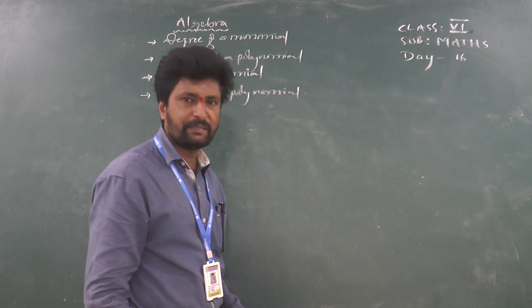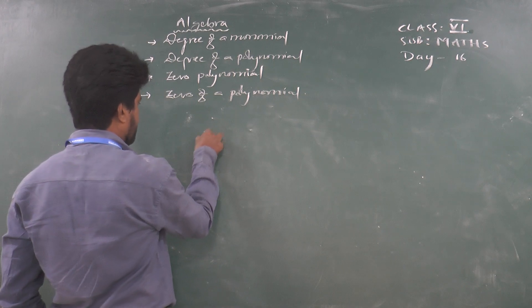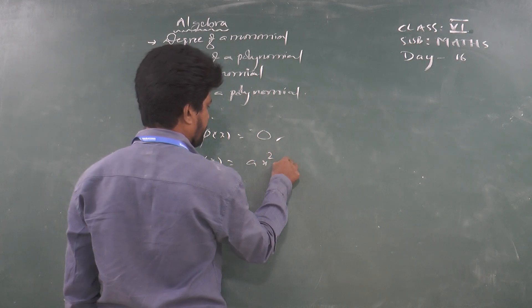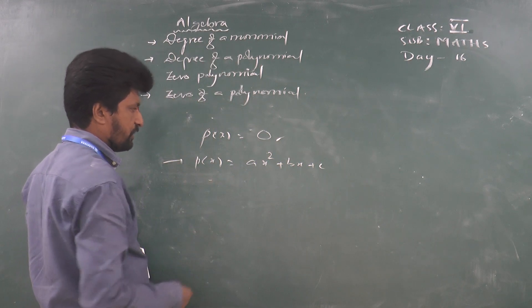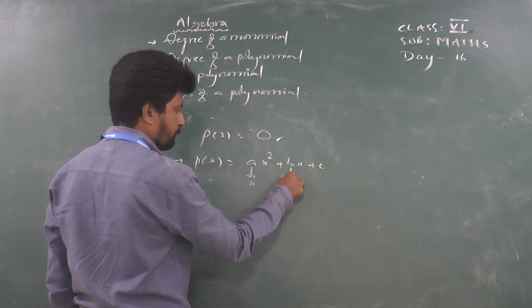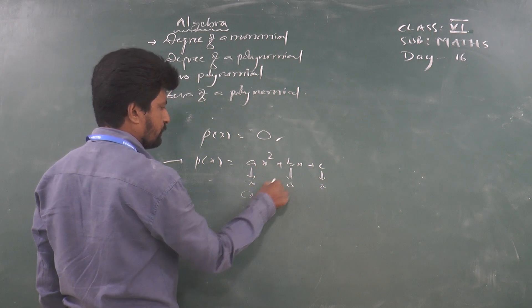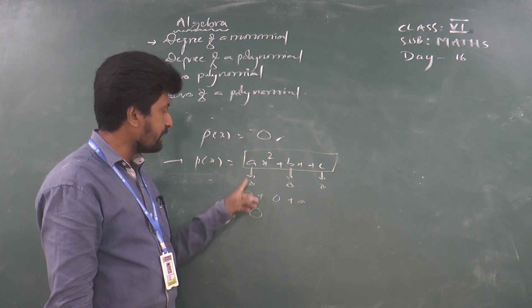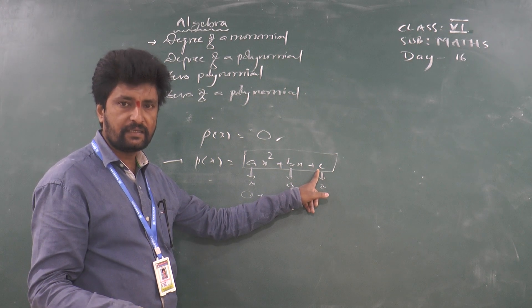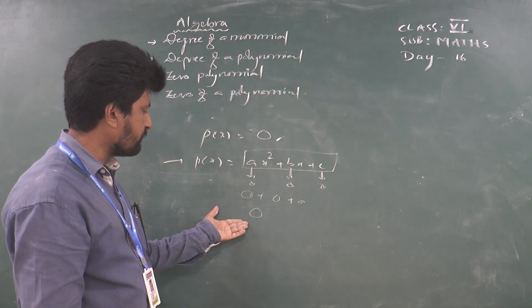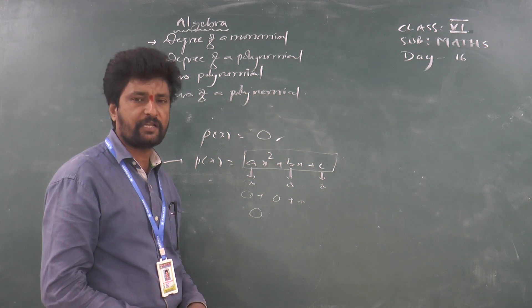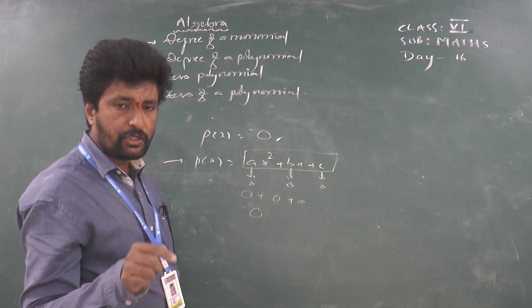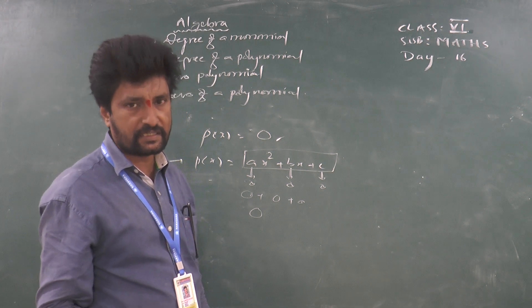Next, zero polynomial. Simply, 0 is the zero polynomial. If p(x) is a polynomial equal to 0, it is called a zero polynomial. For example, if p(x) equals ax squared plus bx plus c, for it to be a zero polynomial, a must be 0, b must be 0, and c must be 0, giving 0x squared plus 0x plus 0, which is 0. So a zero polynomial is one in which the coefficients of all terms are equal to 0. Zero polynomial is unique — other than 0 there is no other zero polynomial.